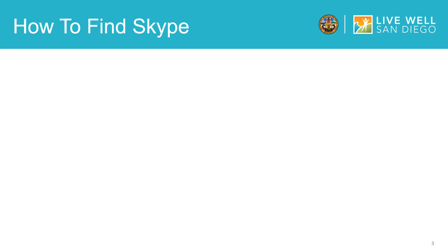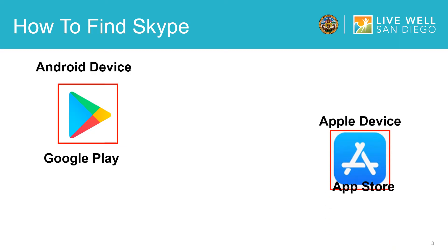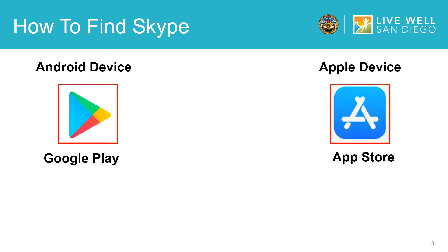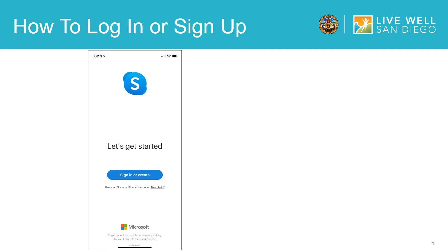The first thing you will do is go to the app store on your mobile device. For Android users this will be called the Google Play Store and for iPhone users this will be the App Store. Once you open the app store you will press search and type in Skype. Once the app pops up on your screen you will install it onto your phone, then open it.